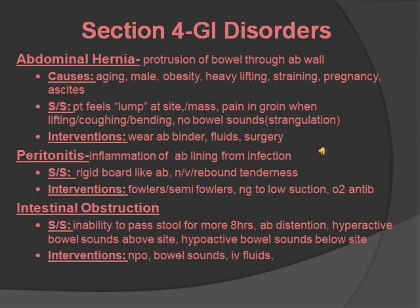Peritonitis is really important — you should know the signs and symptoms because emergencies are important for the NCLEX. Peritonitis is inflammation of the abdominal lining, which can be from infection. Signs and symptoms: rigid, board-like abdomen — they like to use those words — and rebound tenderness, nausea and vomiting. Interventions: place in Fowler's or semi-Fowler's position, NG tube to low suction, oxygen, antibiotics, and notify the healthcare provider right away.